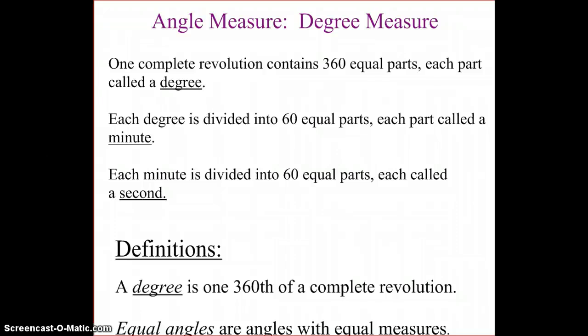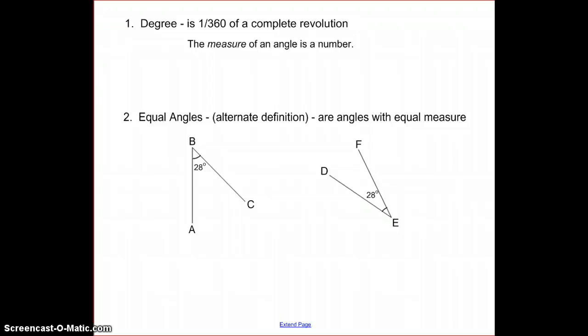So equal angles will have equal measures. Since a degree is 1 over 360, the measure of an angle is considered to be a number. And when angles are equal, those numbers are equal. In this case, we could say that the measure of angle B equals 28 degrees and the measure of angle E equals 28 degrees.